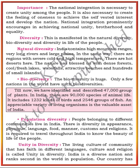In India we have identified and described 47 groups of land. There are 90,000 species of animals, 1,232 kinds of birds, 2,456 groups of fishes, and varieties of organisms — all of which are valuable assets of India.